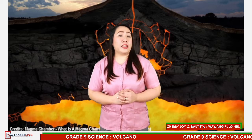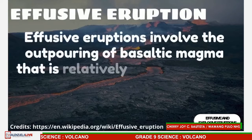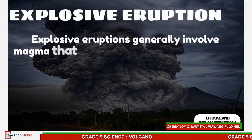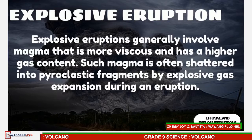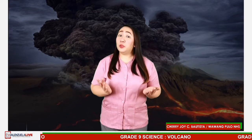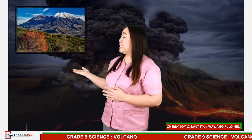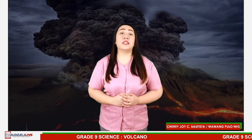In general, eruptions can be categorized as either effusive or explosive. Effusive eruptions involve the outpouring of basaltic magma that is relatively low in viscosity and in gas content. Explosive eruptions generally involve magma that is more viscous and has a higher gas content. Such magma is often shattered into pyroclastic fragments by explosive gas expansion during an eruption. Take note: volcanoes are not limited to a single eruptive behavior classification, just like Mount St. Helens, which exhibited complex eruptions of different types during its eruptive cycle. All eruptions are the result of magma from under the Earth's crust being pushed up to the surface, where it erupts as lava, ash, and rock.